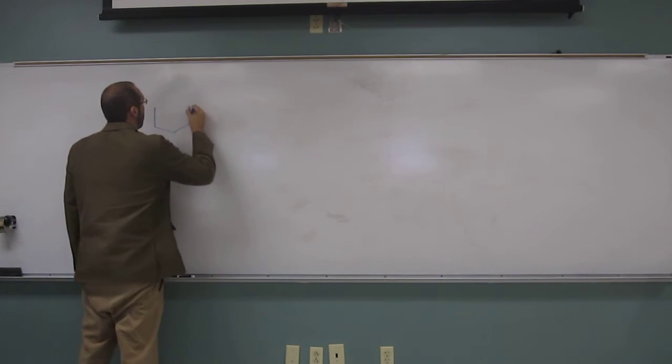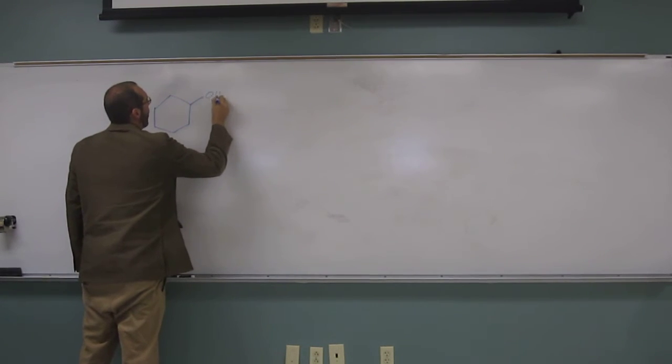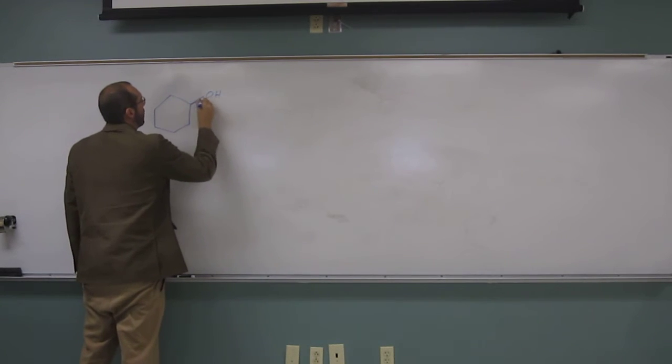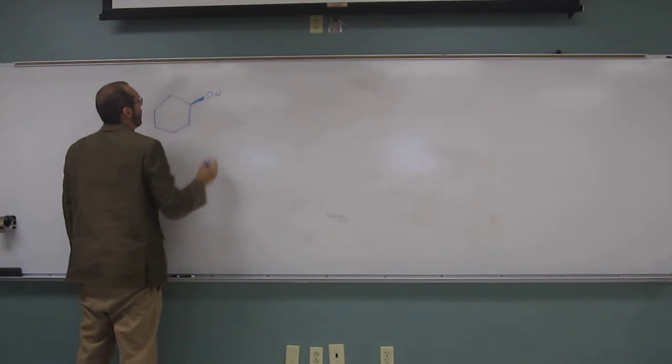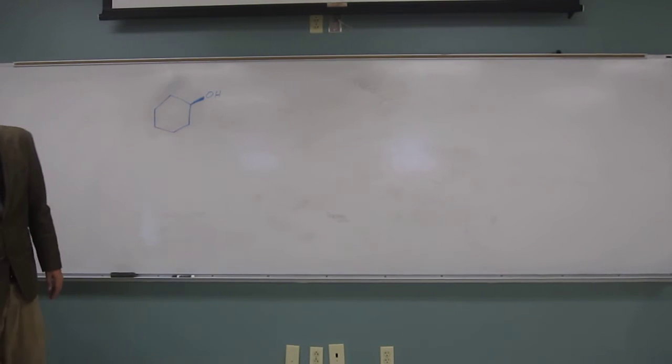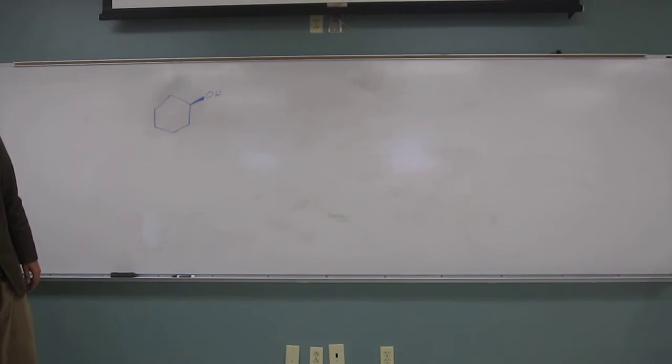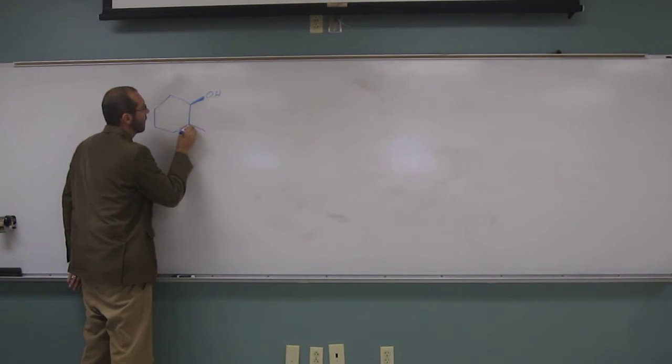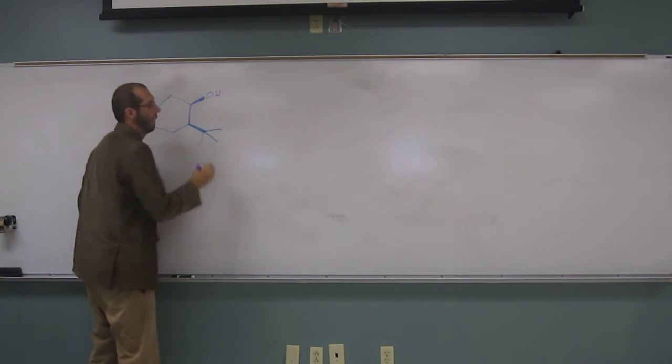So cyclohexanol is that, but it says cis, so it wants some stereochemistry involved. And the tert-butyl is on the number two carbon, so it's going to look something like that.